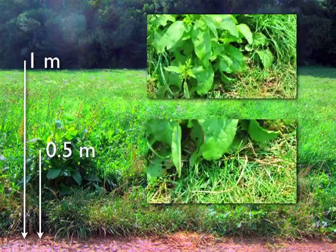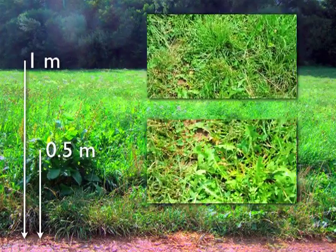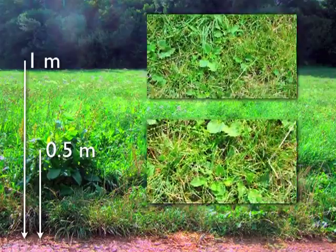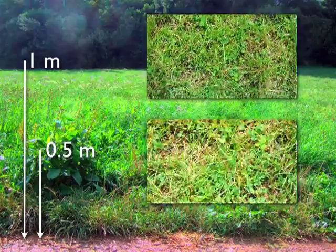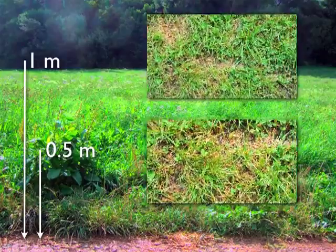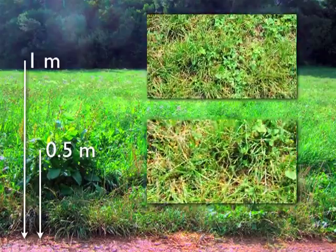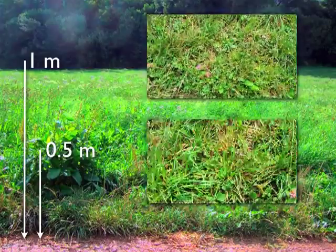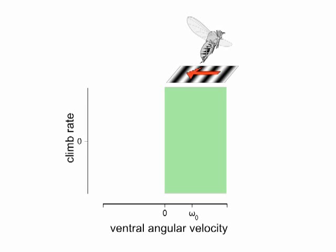The ventral optic flow regulator model by Franceschini, Ruffier, and Serret proposes that insects have a preferred speed of ventral motion, so that if they experience motion that is too fast, they ascend and thus slow it. Insufficient ventral motion will likewise cause descent and restore the preferred speed. So, the altitude at which an insect flies is set to that at which ventral visual motion causes no change in altitude. This model makes predictions that we tested. Plotting climb rate against ventral angular velocity, the point at which climb rate reaches zero is defined to be the preferred ventral angular velocity.